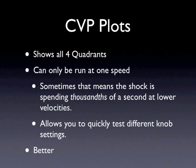So again, the CVP plot — this one actually does show all four quadrants, it's a good plot. The only problem with it is you have to run it at one speed. You can run it at multiple speeds, but typically you're going to run it at one speed, and you're going to type it into the shock dyno and say I want to see the CVP plot for 15 inches per second.